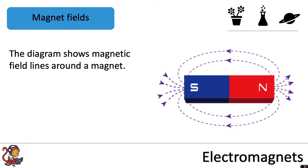The diagram shows magnetic field lines around a magnet. These field lines always point from north to south. In this video we're going to move on from magnets to look at something called electromagnets.